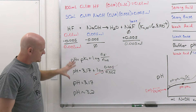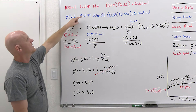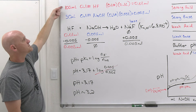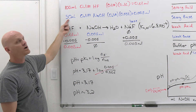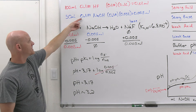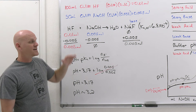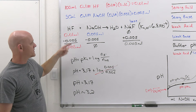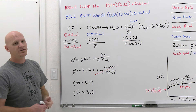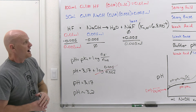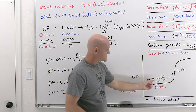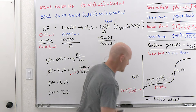Note: it was easier to recognize the half-equivalence point here because the two molarities are equal, so equal volumes means equal moles at the equivalence point and half the volume is halfway there. If the molarities weren't equal, it might be harder to recognize until you see that the moles of base added are exactly half the original moles of HF. We're still in the buffer range — Henderson-Hasselbalch throughout.